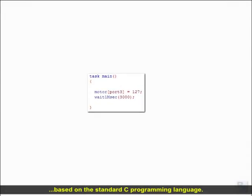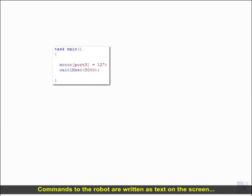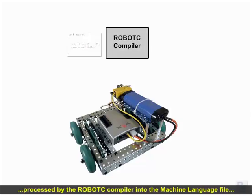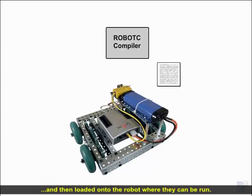Robot C is a text-based programming language based on the standard C programming language. Commands to the robot are written as text on the screen, processed by the Robot C compiler into the machine language file, and then loaded onto the robot where they can be run.